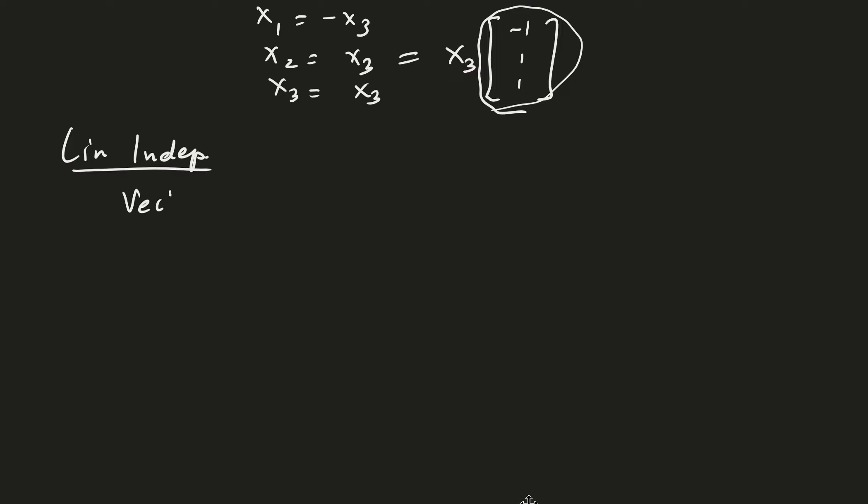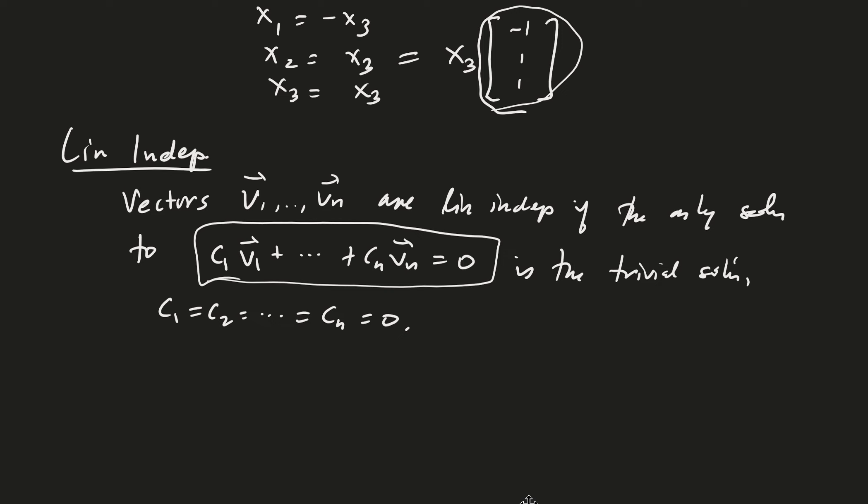So, vectors v1 through vn are linearly independent if the only solution to c1 v1 plus cn vn equals 0 is the trivial solution, which is c1 equals c2 equals cn equals 0. Now, I say that this form is very important to remember.